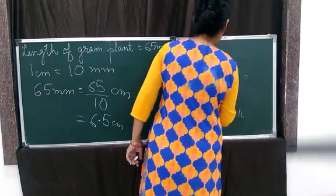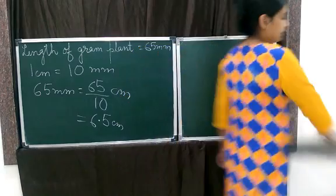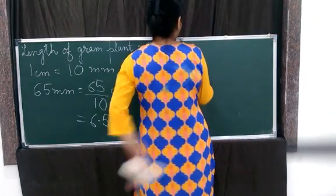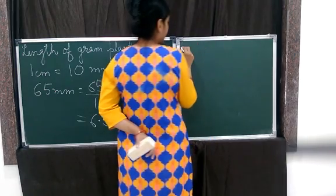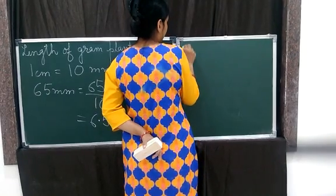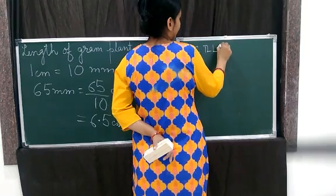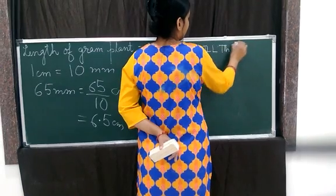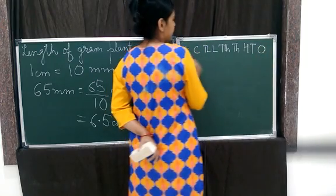So, we have completed this exercise. Now, moving a little ahead, we are going to start a new term today - actually, it is not a new term. Like for example, if we talk about the Indian number system, that is 10 crores, crores, 10 lakhs, lakhs, 10 thousands, thousands, hundreds, tens, ones. This is the number system.